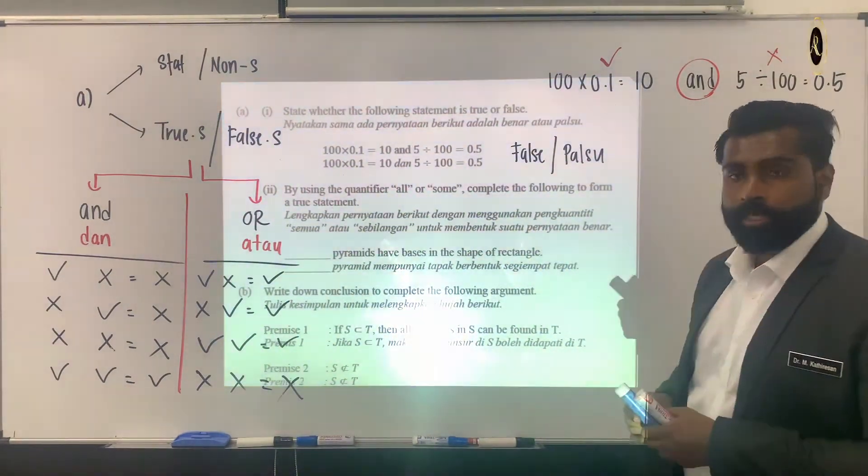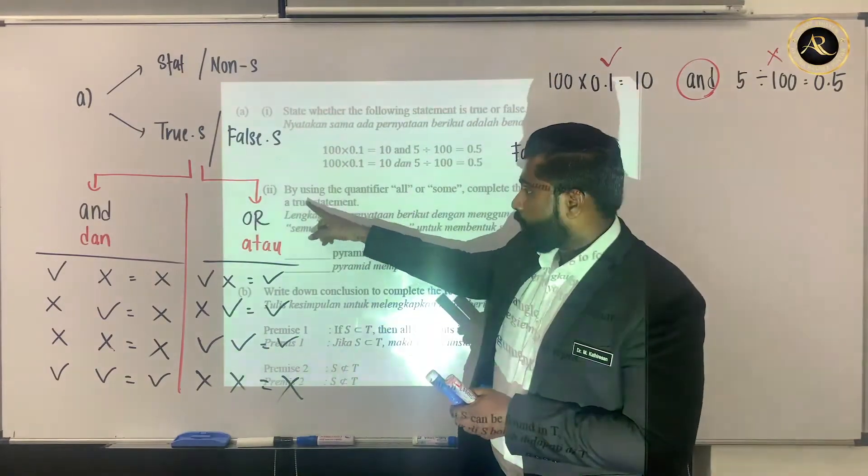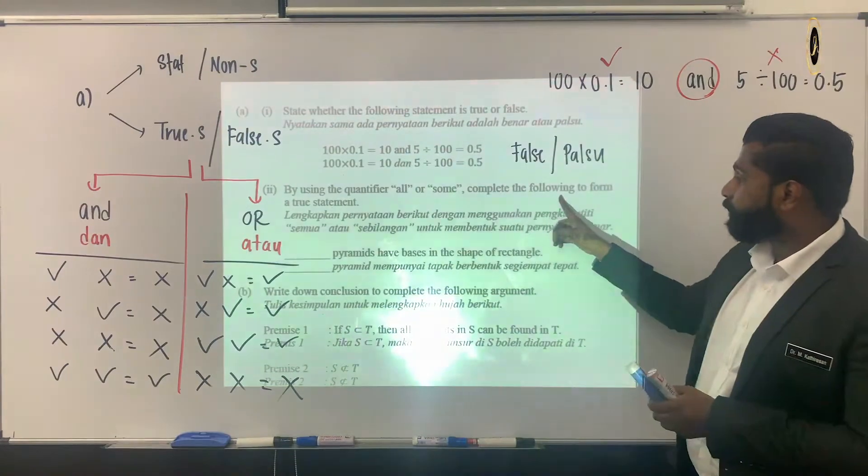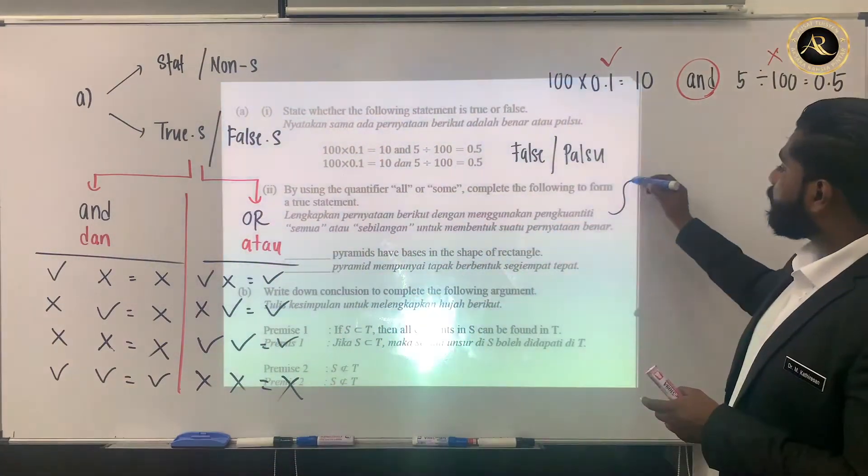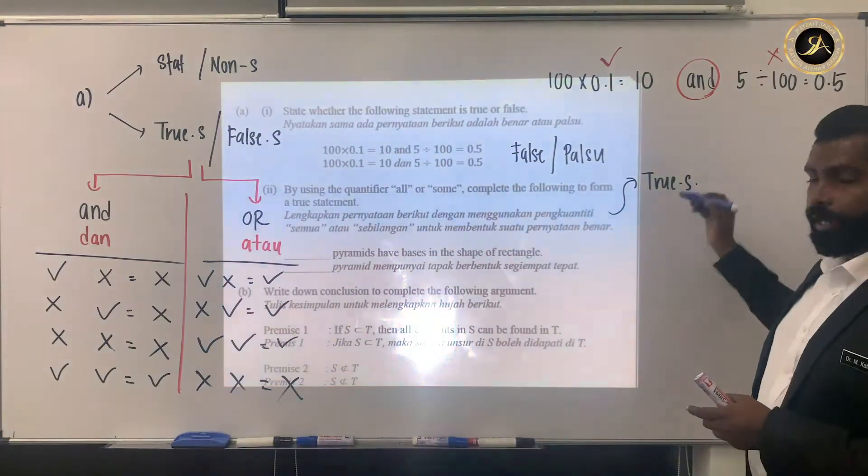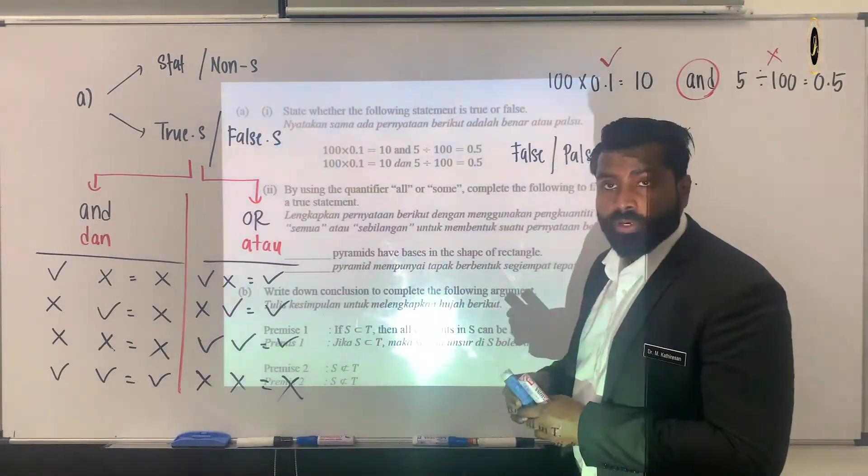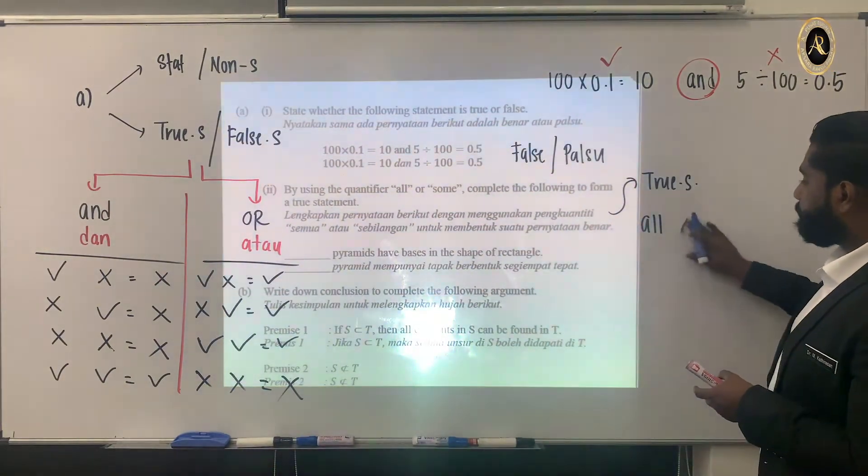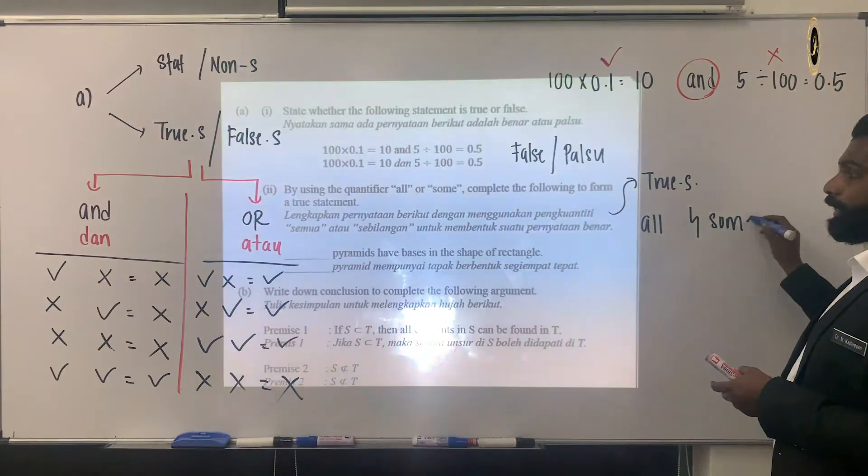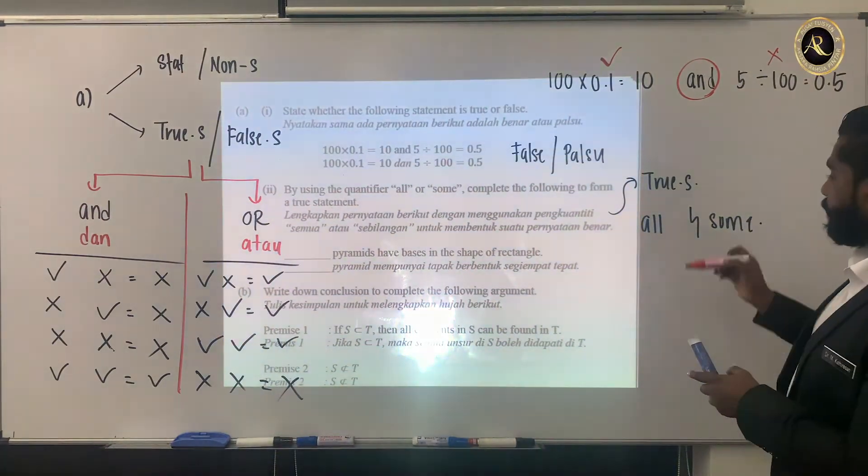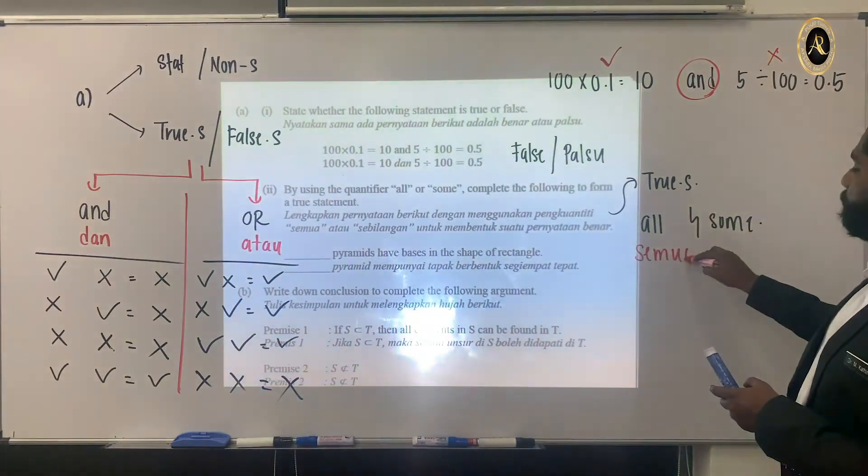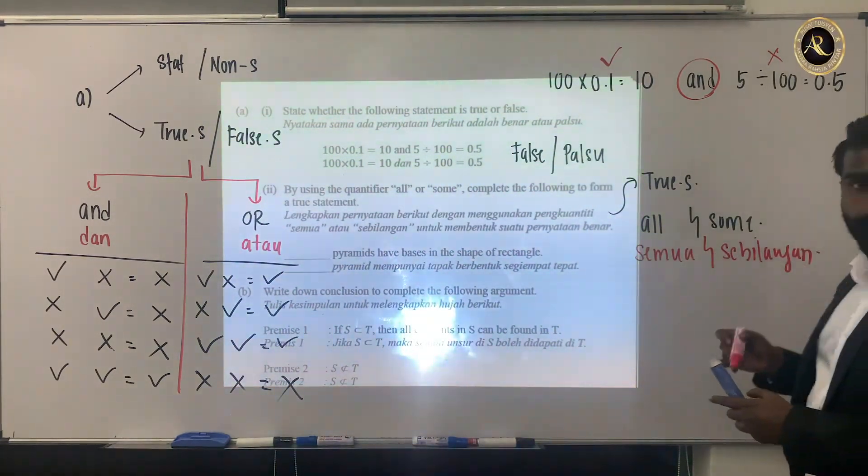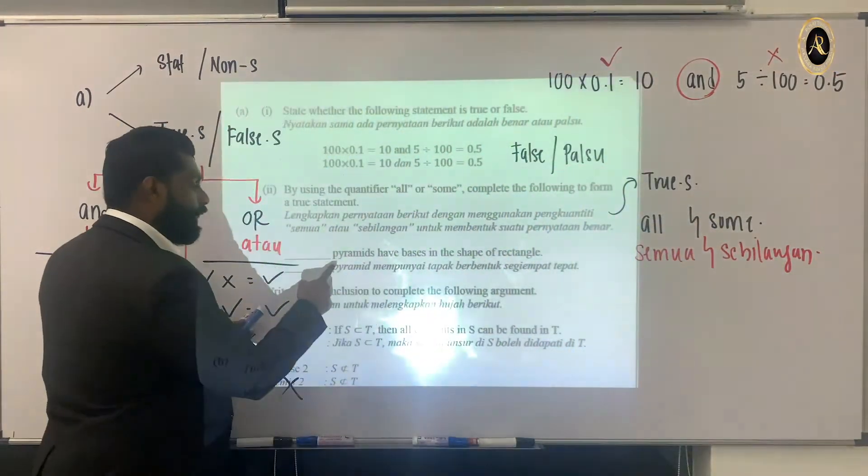Now for question B, by using the quantifier 'all' or 'some', complete the following to form a true statement. You're going to use the quantifier 'all' or 'some'. In Bahasa Melayu we use the words 'semua' or 'sebilangan'.